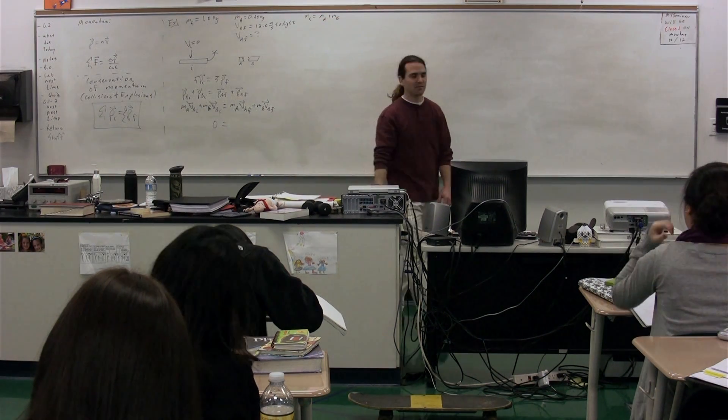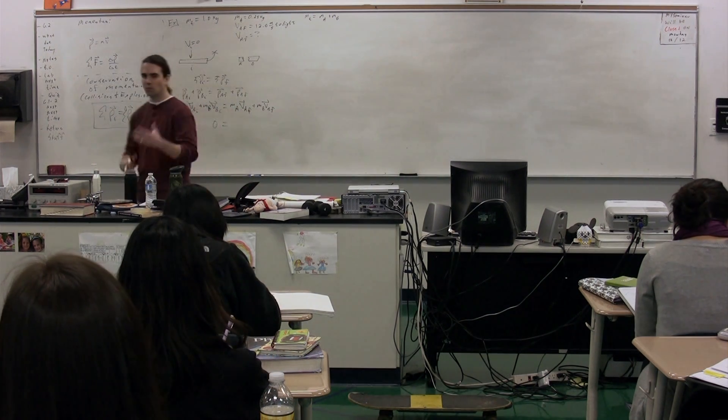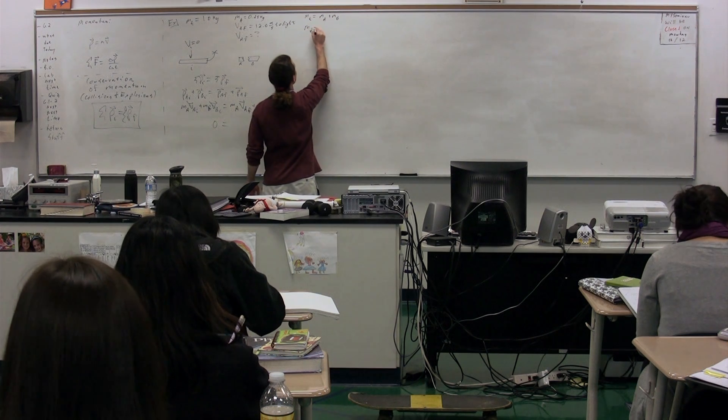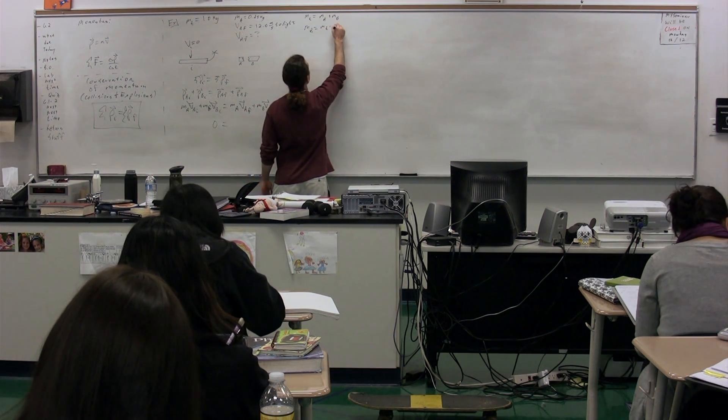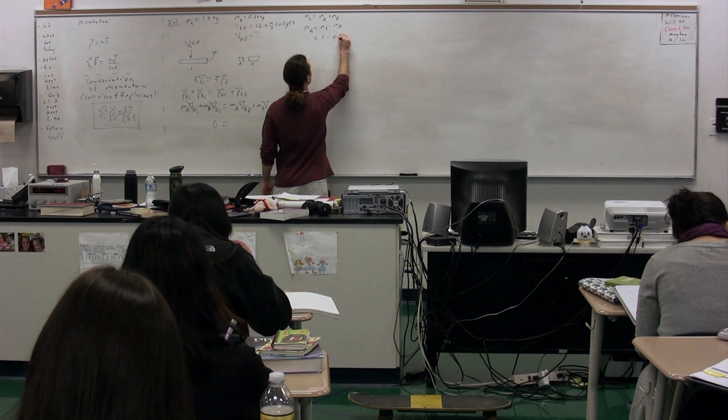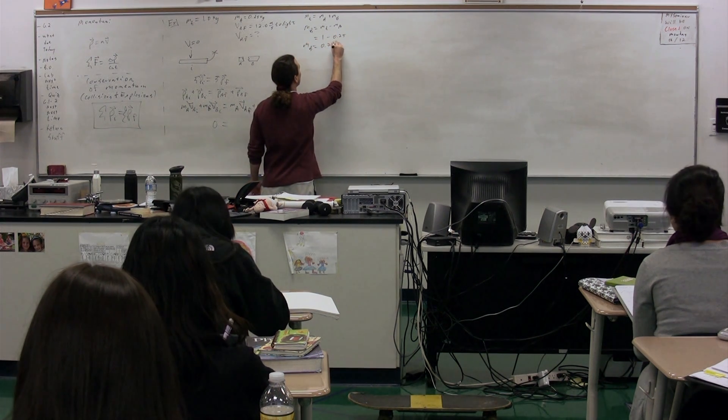We're going to assume that no mass is lost during this explosion, which isn't quite true but is good enough for this class. So the mass of B equals the total mass minus the mass of A, or 1 minus 0.25. The mass of B is 0.75 kilograms.